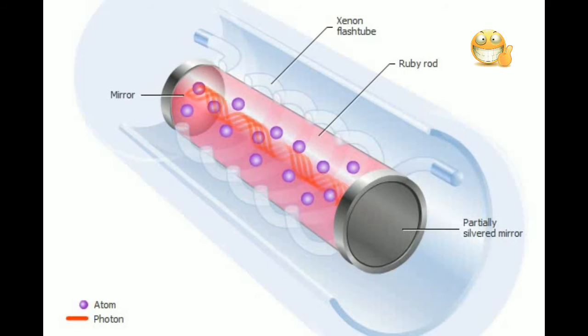The laser light is amplified as photons traveling back and forth between the mirrors intensify the reactions. The light that we use leaves the laser through the partially silvered mirror.